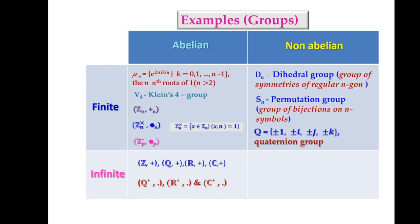set of complex numbers under addition and collection of all non-zero rational numbers under multiplication, collection of all non-zero real numbers under multiplication, collection of all complex numbers which are non-zero under multiplication are examples for infinite abelian group.